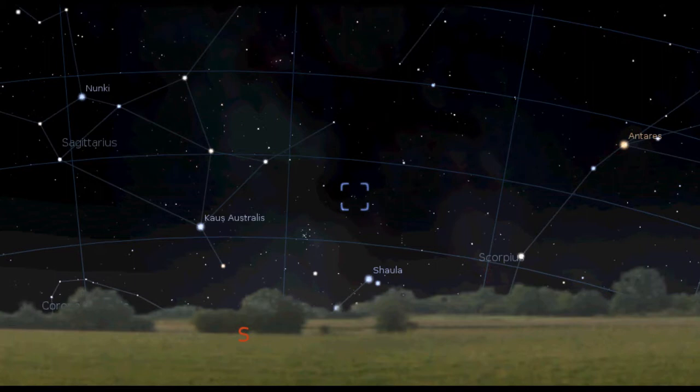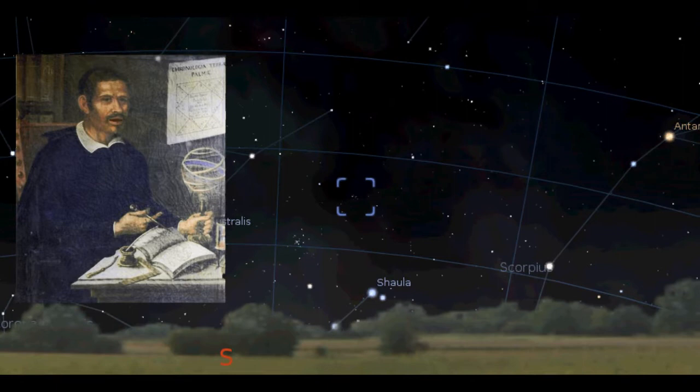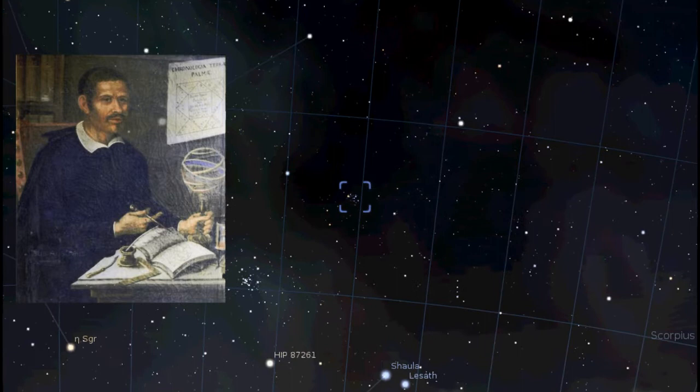Giovanni Battista Godierna was the first astronomer to spot this cluster in the sky in 1654. It is beautiful, brilliant, wonderful, amazing, grand!